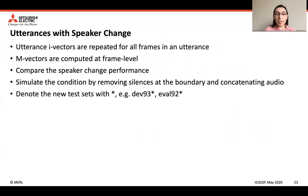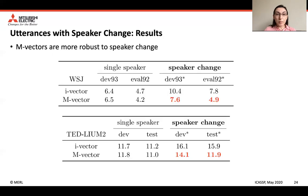Since i-vectors are repeated for all frames in an utterance while m-vectors are computed at frame level, we hypothesized that m-vectors would be more robust to speaker changes within an utterance. To test this, we simulated speaker change conditions by removing silences at boundaries and concatenating audio files from different speakers. As expected, on speaker change files, word error rate increases for both i-vectors and m-vectors. However, the performance degradation is less severe for m-vectors: for WSJ, we see 3% lower word error rate, and for Tedlium, 2–4% lower word error rate on the dev and test sets respectively.